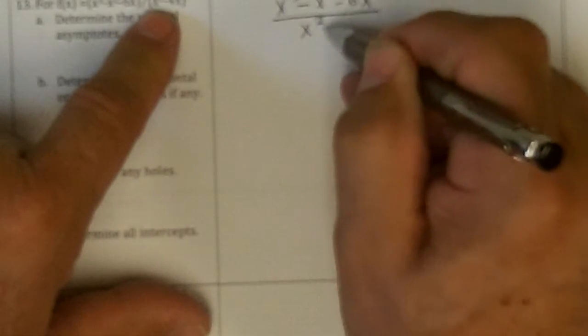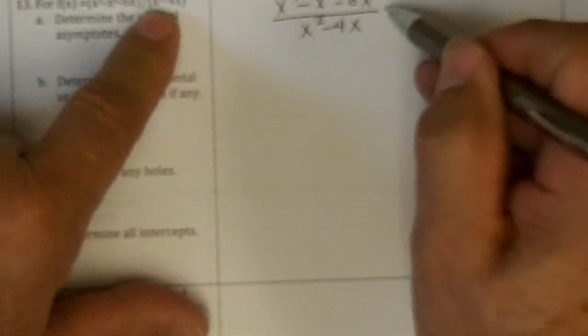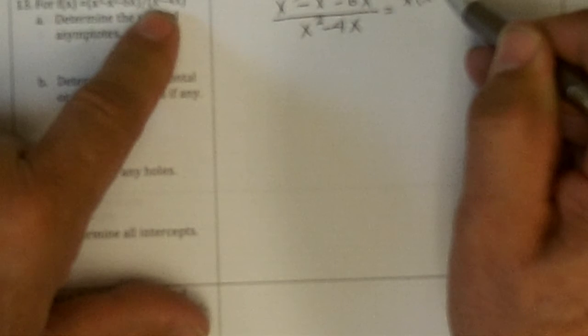So now we have x to the third minus x squared minus 6x over x squared minus 4x. The first step of factoring is to pull out what's in common, so I get x times x squared minus x minus 6 over x times x minus 4.